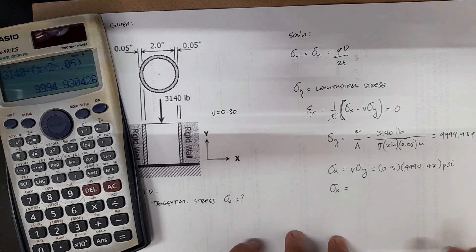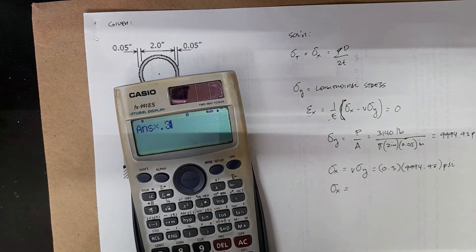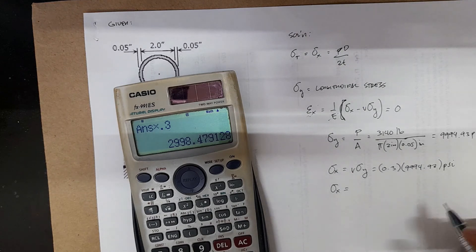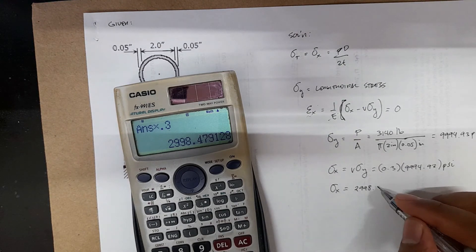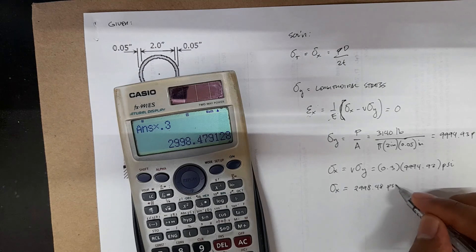Stress x equals 0.3 times 9,994.93, giving us 2,998.48 psi.